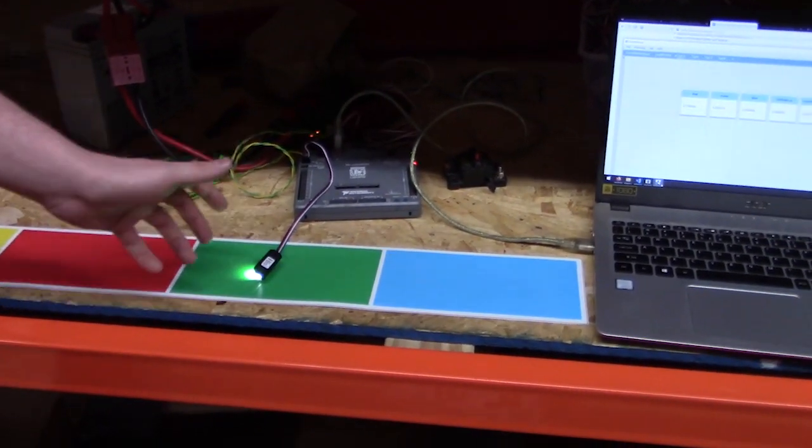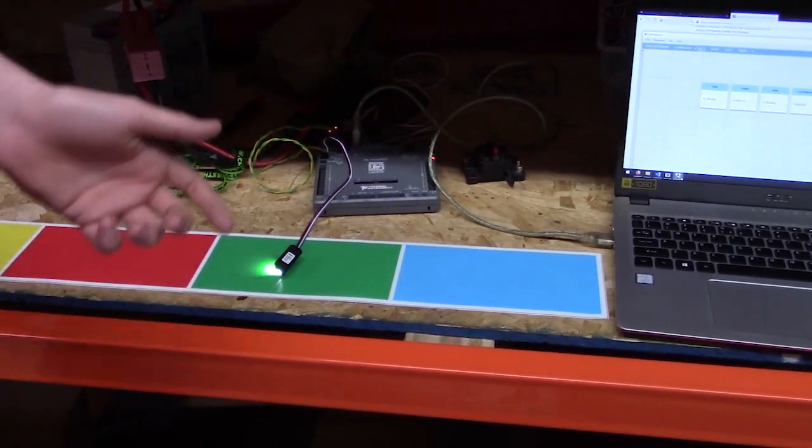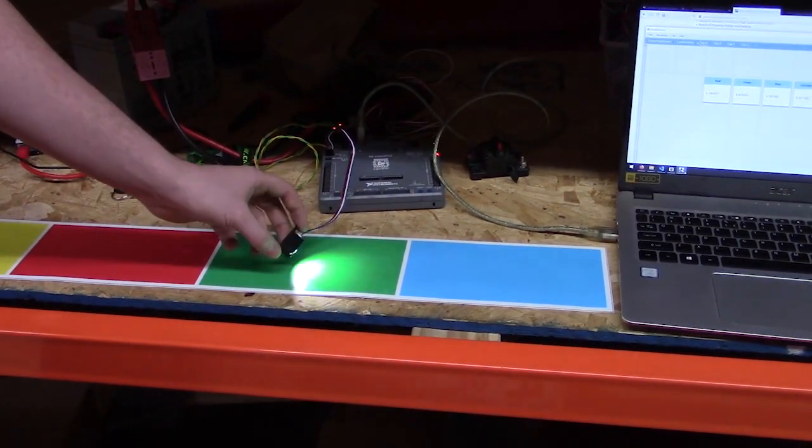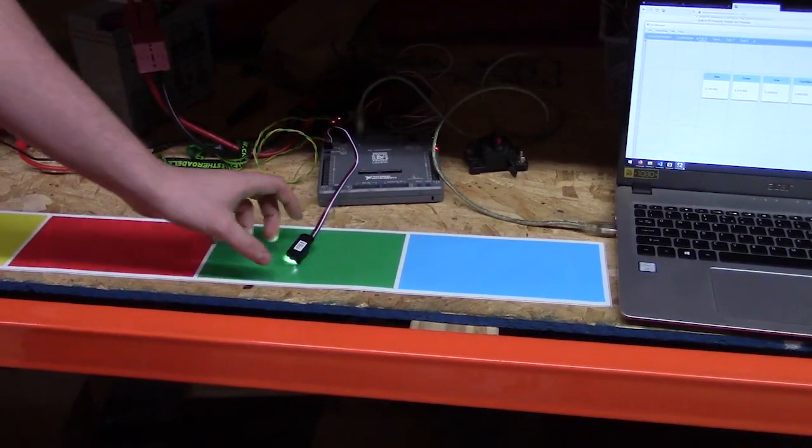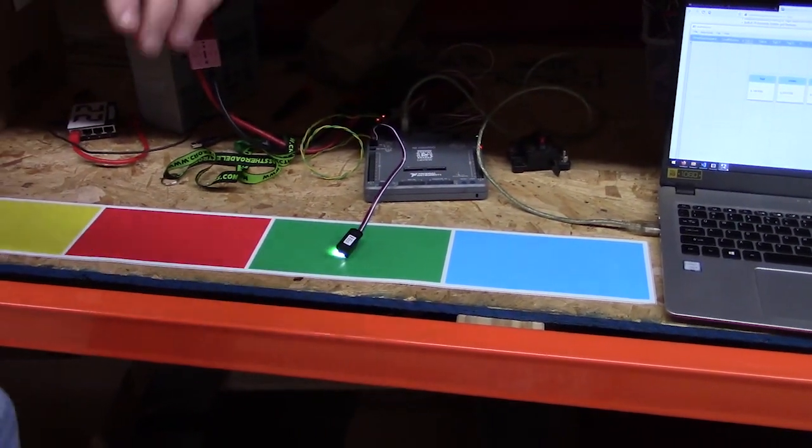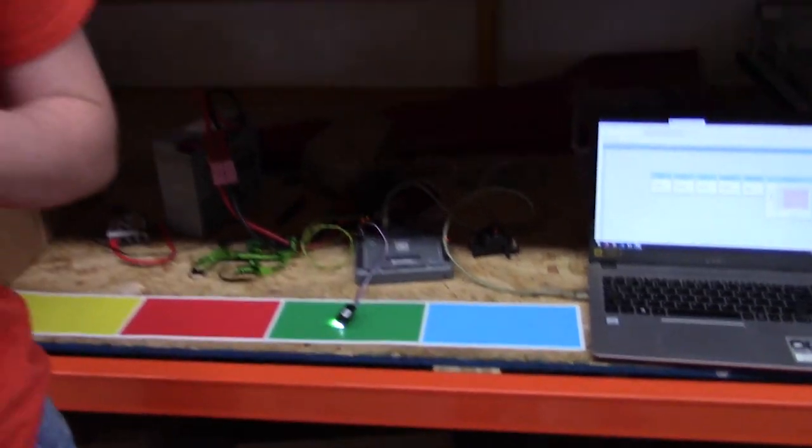Basically all we did here is we went to Rev's website and downloaded their sample code for this sensor. Then we added the library, the JSON for the color sensor to our code base. That's extremely important so that when someone else references your code base, if you're using version control, it keeps across multiple things.